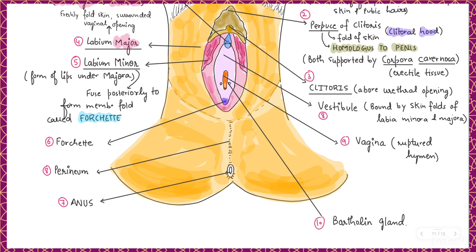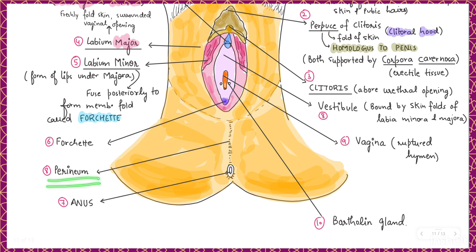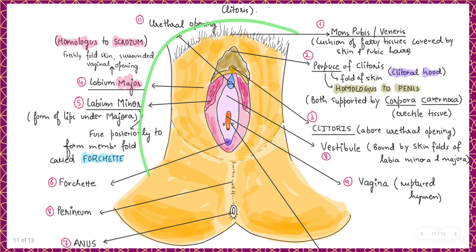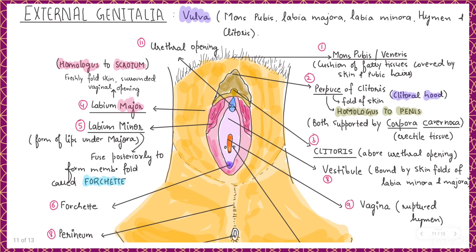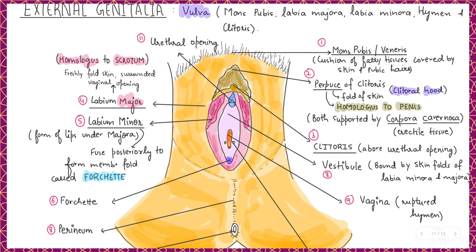The last structure visible is the anus, and the region between the fourchette and the anus is called the perineum. This covers all the structures of the external genitalia, or vulva, of the female reproductive system. Please like, subscribe, share, and comment — thank you.